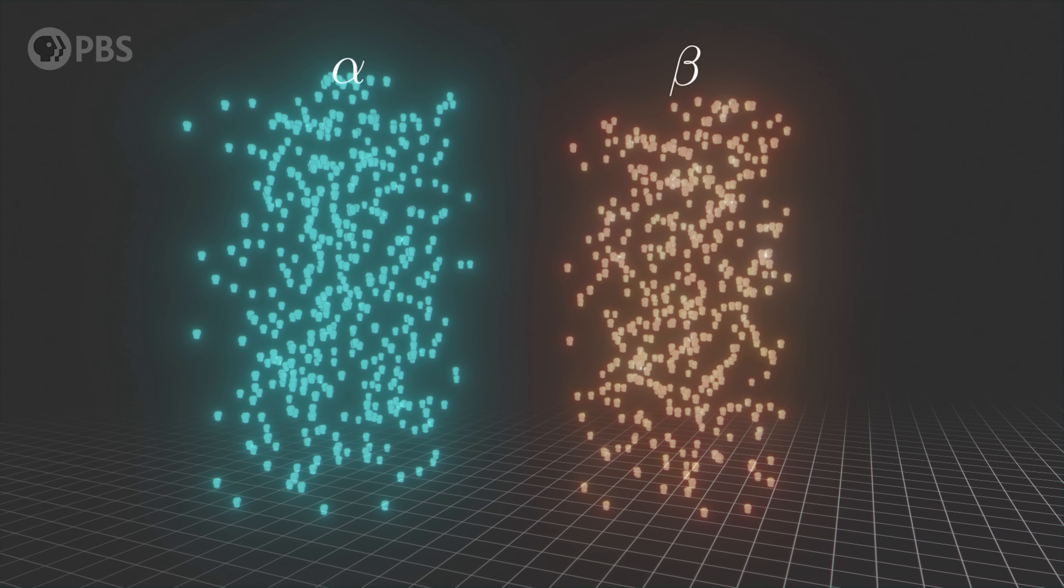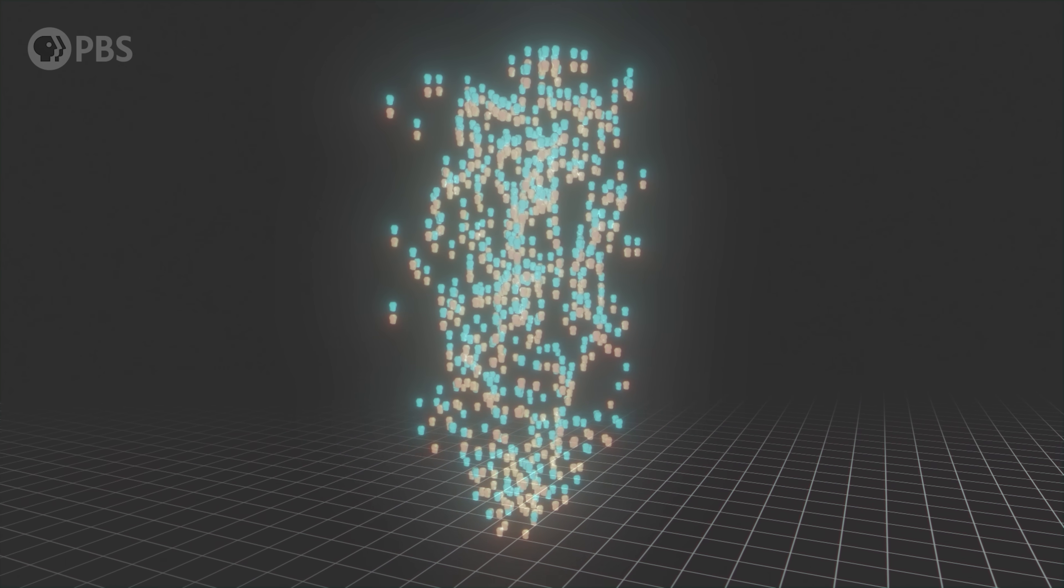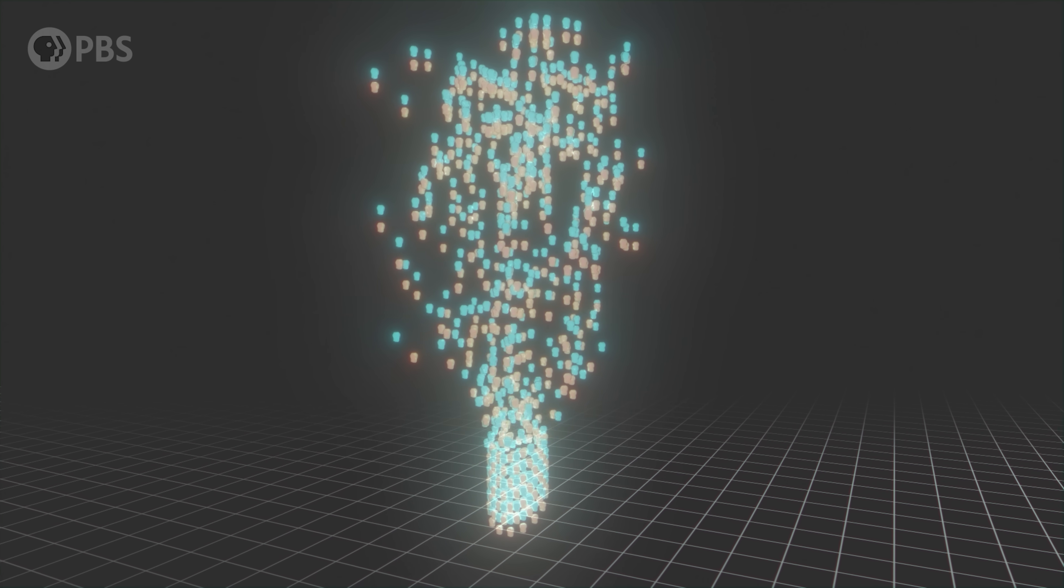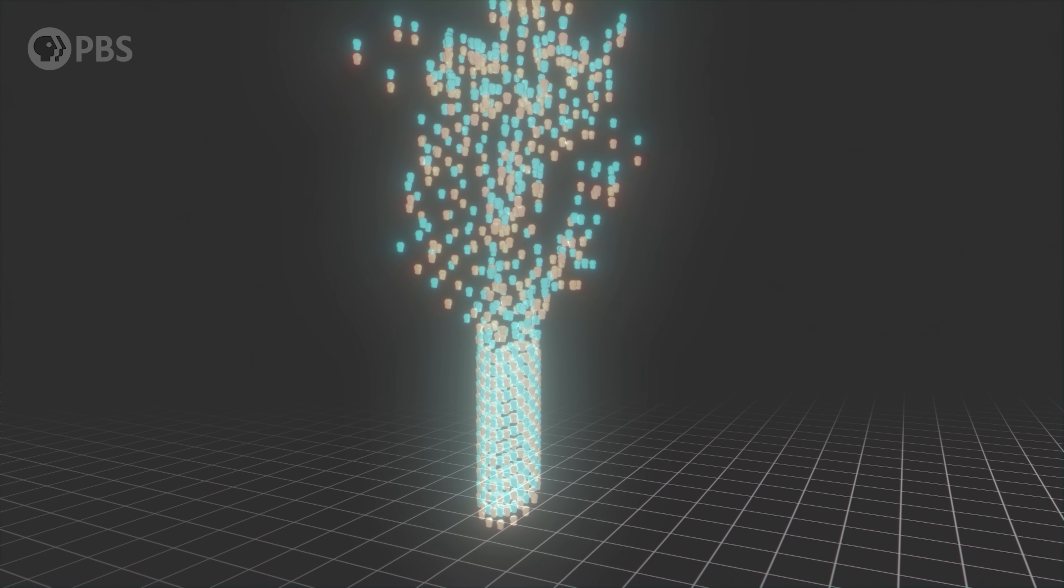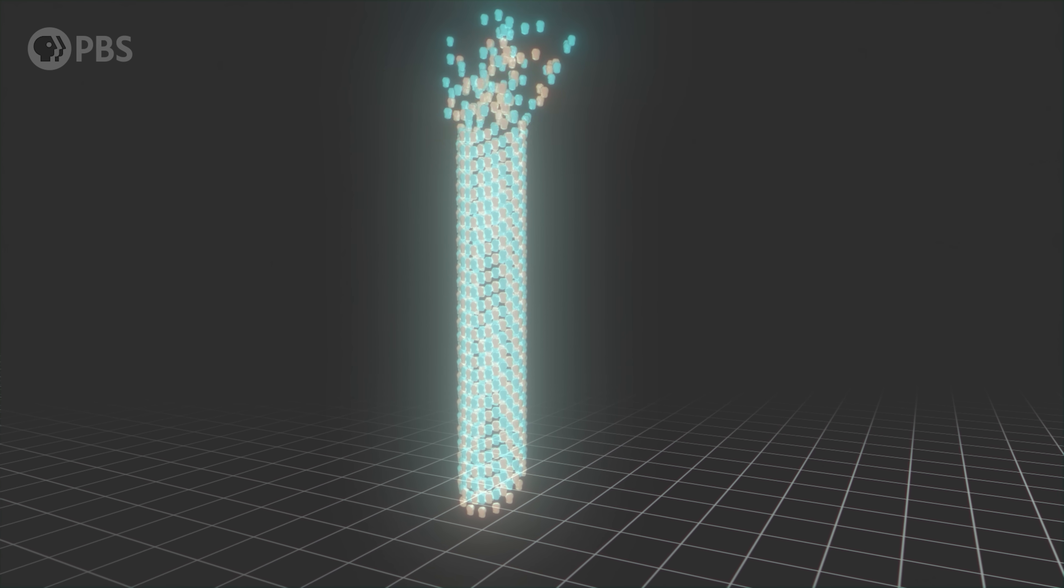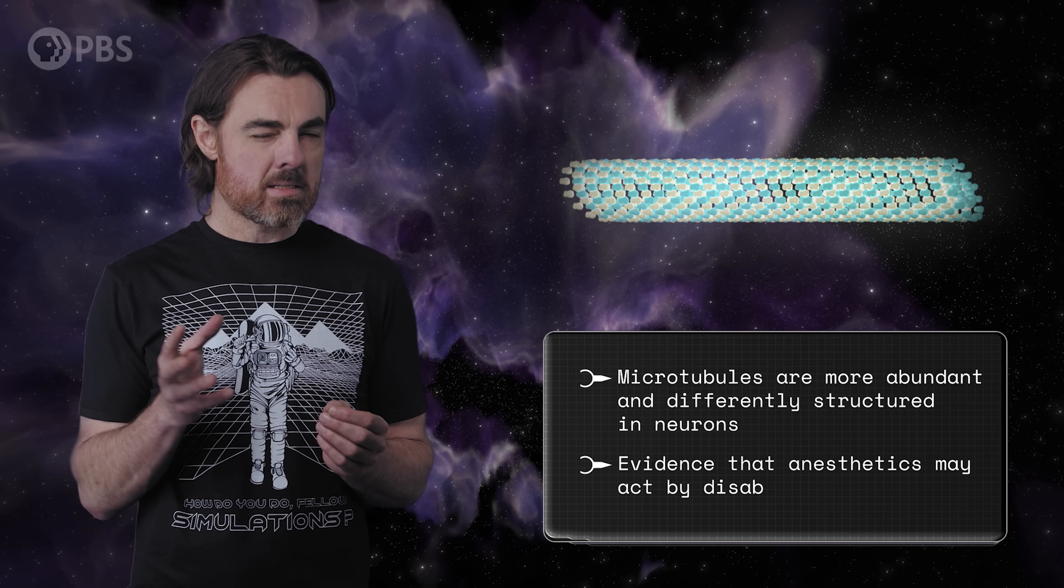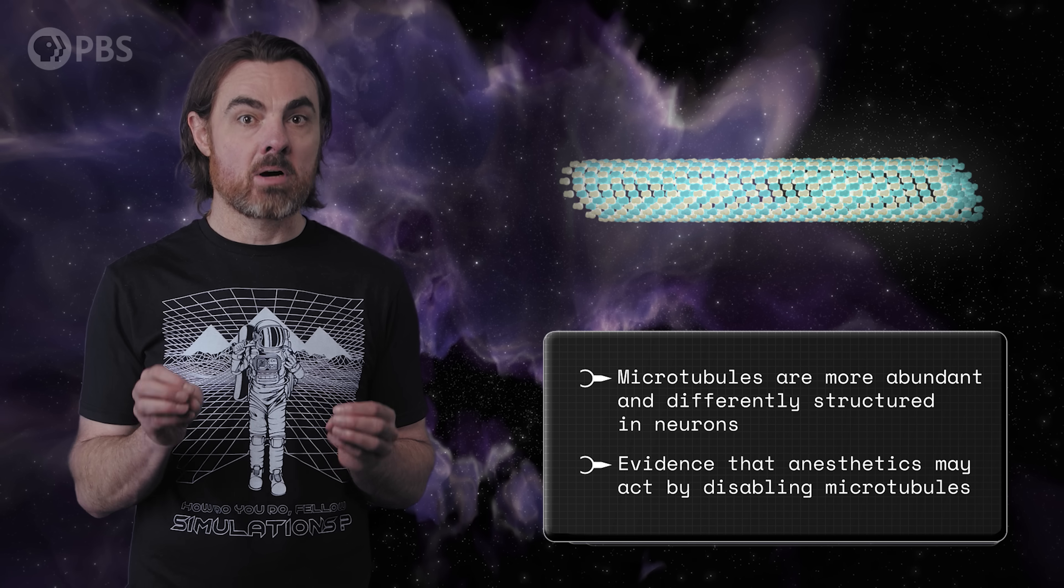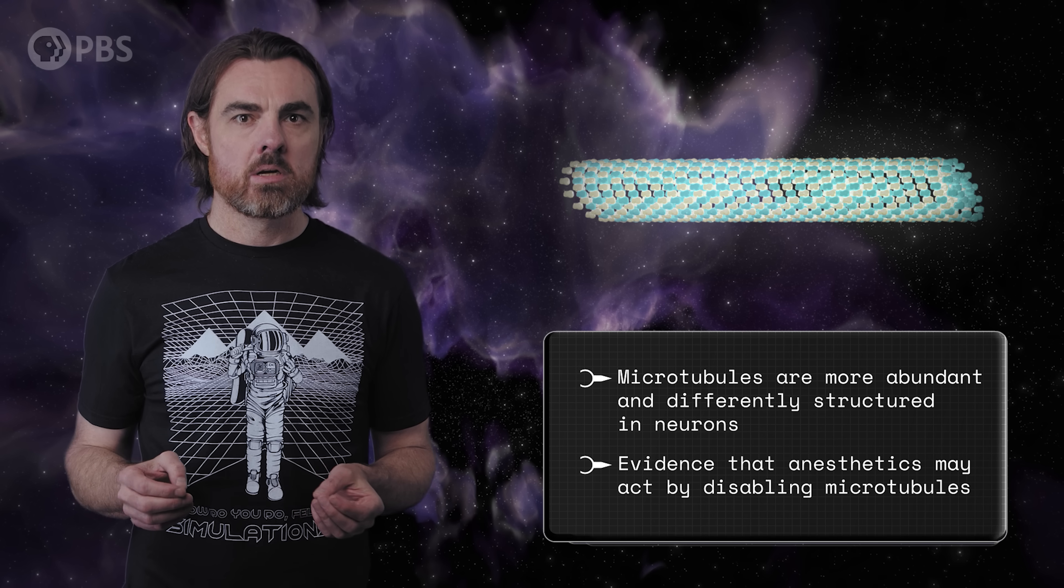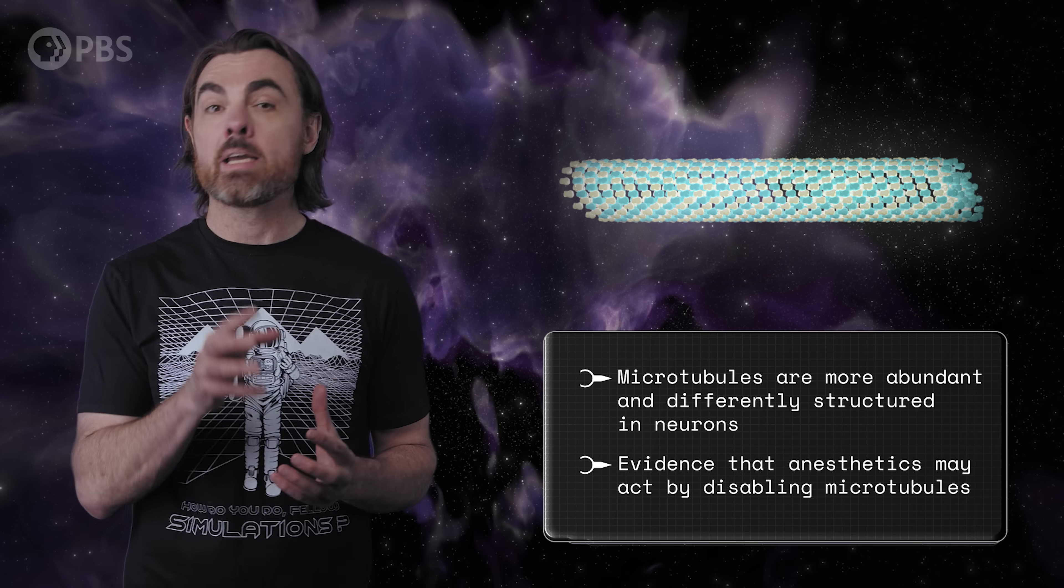Microtubules also have an extremely regular structure, almost crystal-like. They are made of alternating tubulin molecules of two different types. Those molecules have a polarity which can point one way or the other. This structure got Hameroff to thinking that maybe microtubules could in some way work as molecular computers, or at least some sort of molecular information storage. Add to this two more hints. Microtubules are abundant and differently structured in neurons than in any other cell. And also, there's some evidence that anesthetics may act by disabling microtubules, thereby disabling consciousness. So it's not so crazy that Hameroff wondered whether these molecules might actually have some more fundamental role in consciousness.